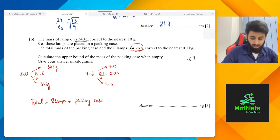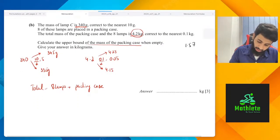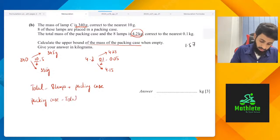Let's first of all make an equation for the total, then we'll see what it is that we have to do. Then we'll see which upper bound and which lower bound to take. Total would be the eight lamps plus the packing case. You want the upper bound of the mass of the packing case when empty. So packing case is going to be equal to total minus the mass of eight lamps.